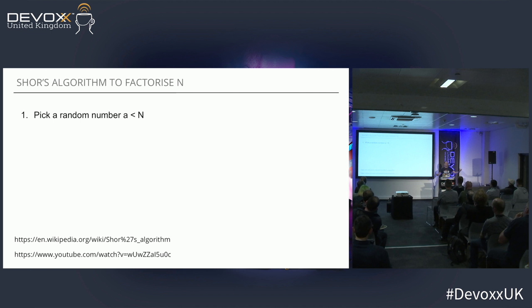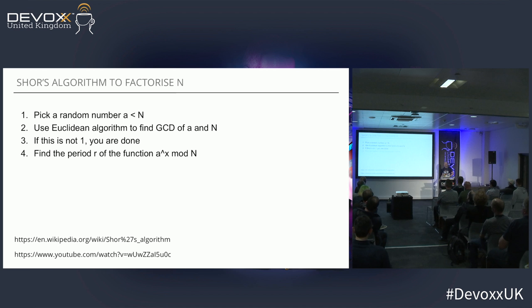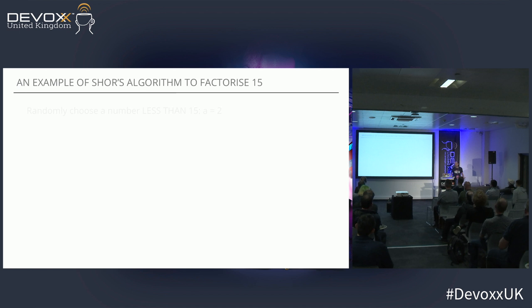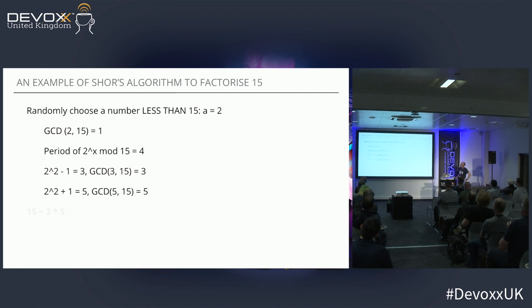The way it works: say I'm trying to factorise 15 — I pick a number less than 15 at random. It seems an odd way to start, but that's how it works. If that doesn't happen to be a factor — let's say I choose 2 — what we're interested in is finding the period of that number with respect to 15. So, 2 squared is 4, 2 to the 3 is 8, 2 to the 4 is 16, which is 1 mod 15. So 2 has a periodicity of 4 — it goes 2, 4, 8, 1, 2, 4, 8, 1. Simple algebra tells us that 2 squared plus 1 and 2 squared minus 1 will yield the factors of 15. Because 2 squared plus 1 is 5, and 2 squared minus 1 is 3. That's a simple example of how to factorise 15.